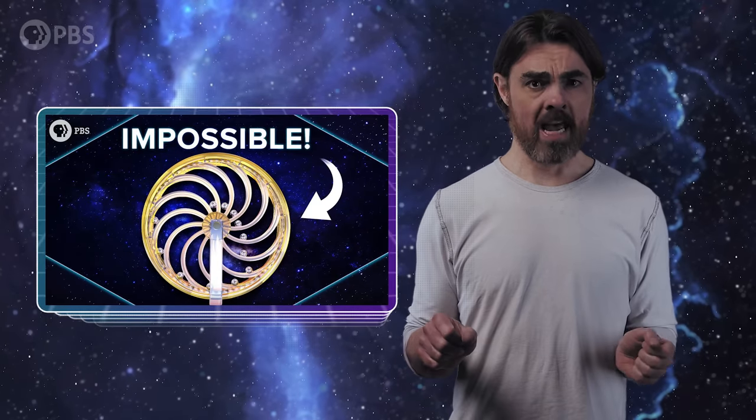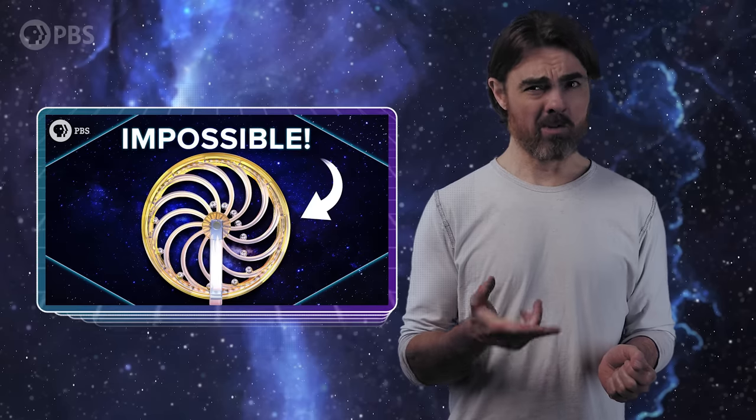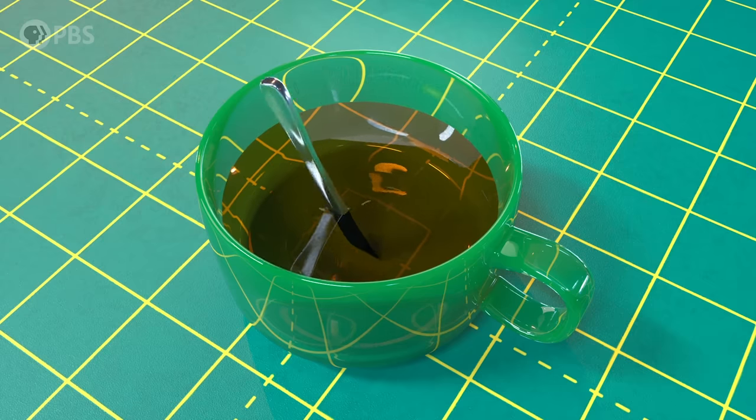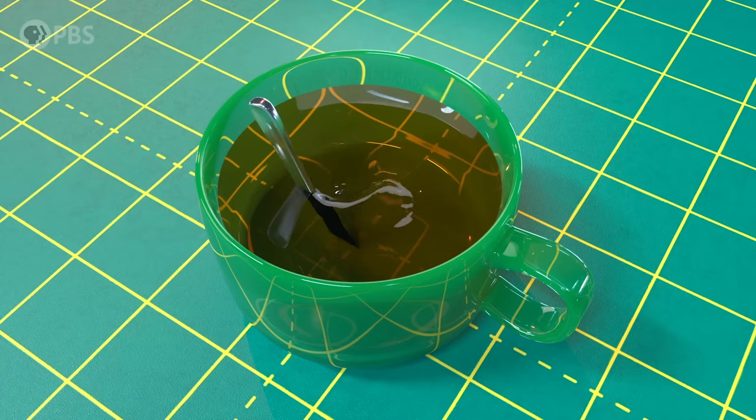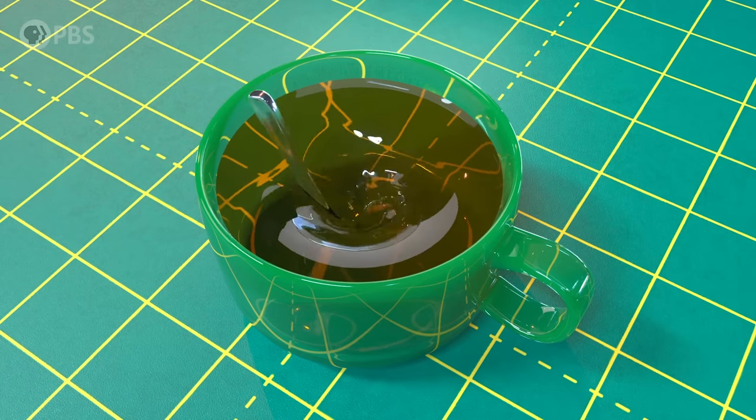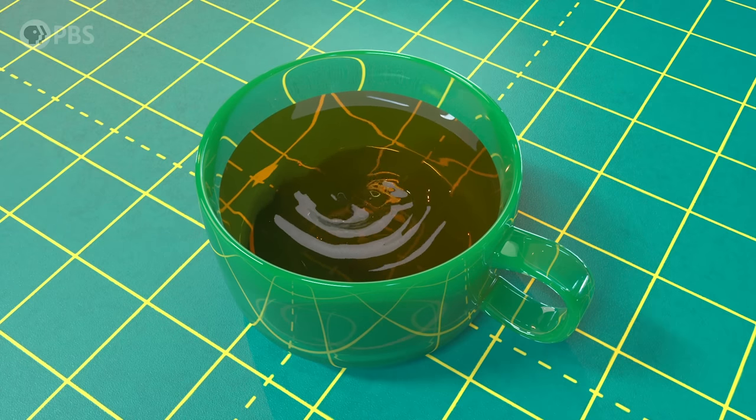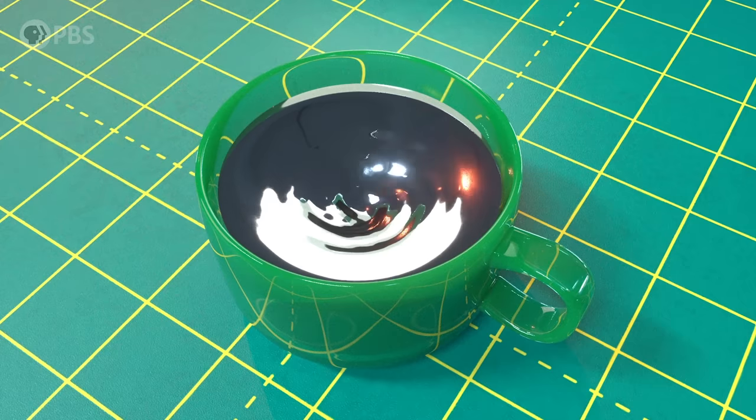Perpetual motion machines are all scams, but perpetual motion itself is possible, sort of. If you stir a cup of tea, you'll create a vortex that slows down over time, but there's a type of fluid in which the vortex will never stop, at least theoretically.